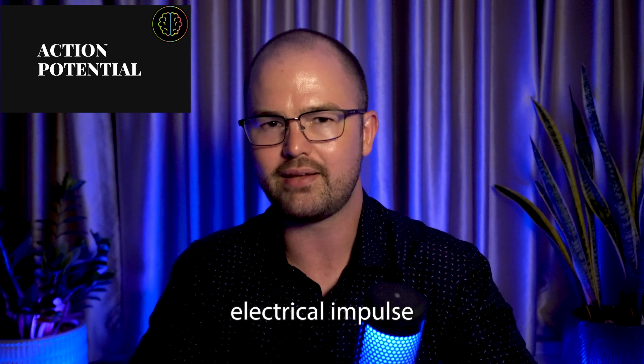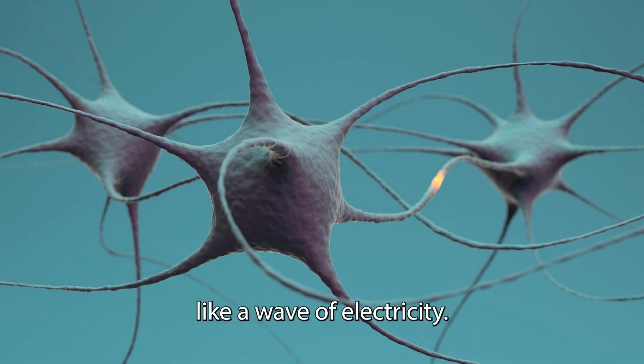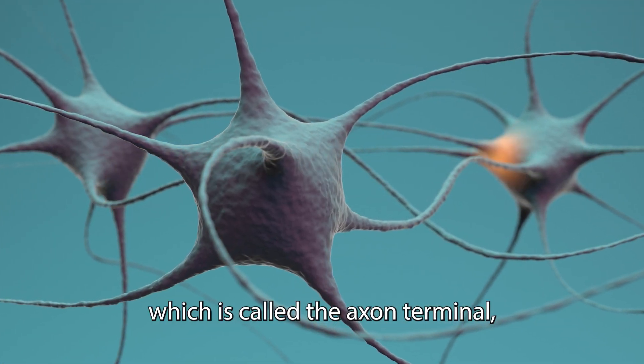An action potential is like a quick electrical impulse that travels along the neuron. It's basically like a wave of electricity. Once the action potential reaches the end of the neuron, which is called the axon terminal, it triggers the release of neurotransmitters.